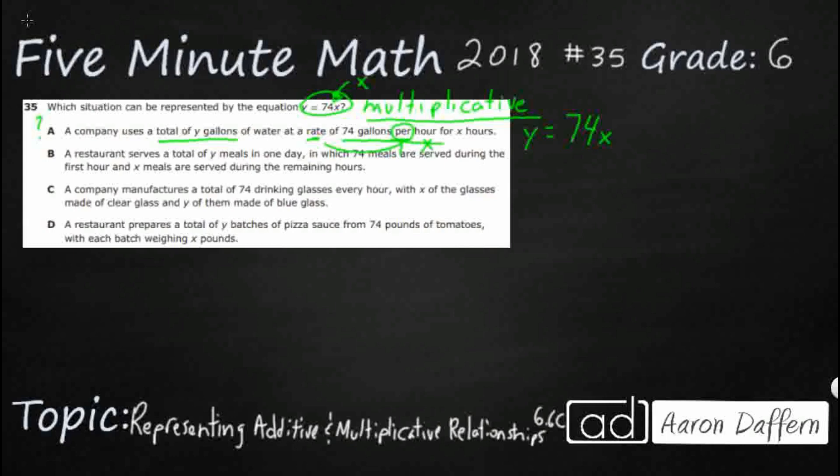A restaurant serves a total of y meals in one day. So that's going to be another total right there, in which 74 meals are served in the first hour, and x meals are served. There we go. So that's going to be an additive relationship. It's addition. And our word here is and. This very simple word and is our clue that we're going to add these rather than multiply them. So it's 74 plus x instead of 74x.